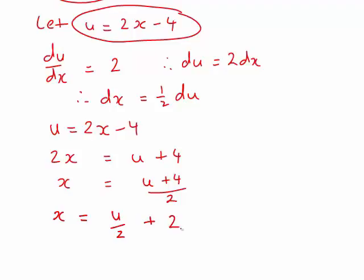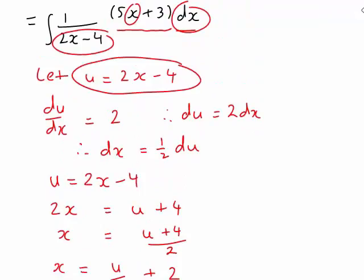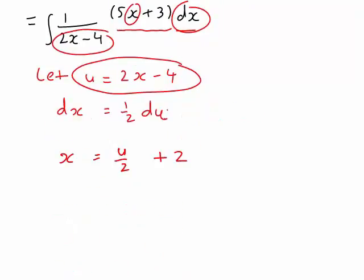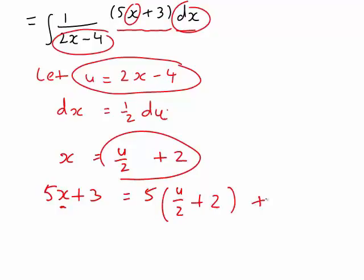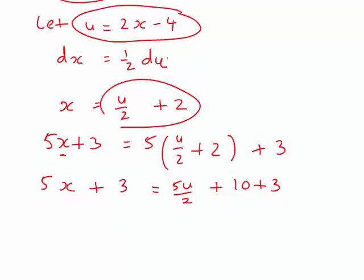So then, our required expression involved 5x plus 3. This is summarizing what we have found so far. Therefore, 5x plus 3, which is what we're wanting to rewrite in terms of u, is the same as 5 times u divided by 2 plus 2, plus 3. Tidying that up, it becomes 5u divided by 2 plus 10 plus 3. Hence, in terms of u, 5x plus 3 can be written as 5u divided by 2 plus 13.